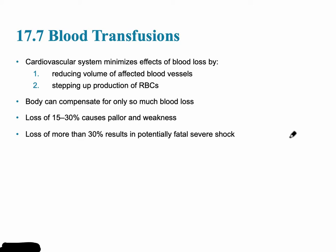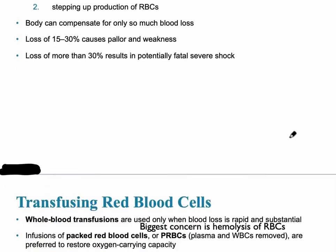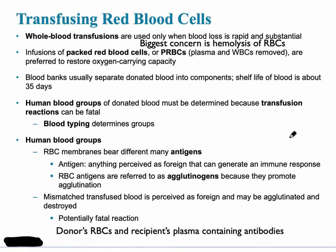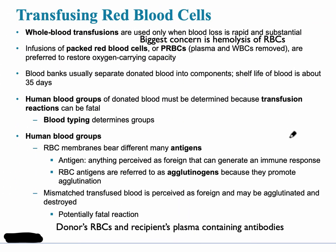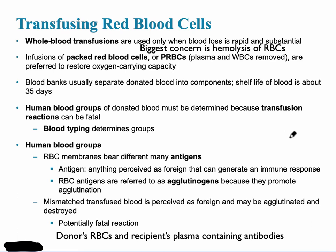When considering blood transfusions, we're most concerned with the antigens and the antibodies, because when those two interact, there can be eventual blood clumping, and red blood cells can eventually burst — that's called hemolysis. Whole blood transfusions are used only when blood loss is rapid and very significant, and the biggest concern is the hemolysis of the red blood cell.